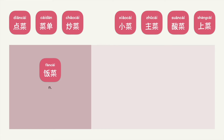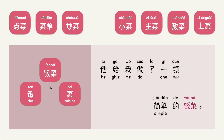饭菜 is a noun. 饭 means rice, 菜 is cuisine. Put into context, you can say: 他给我做了一顿简单的饭菜。 — Rice and cuisine combined. What do you think 饭菜 means? 饭菜 means a meal. 简单的饭菜 in this example refers to a simple meal.